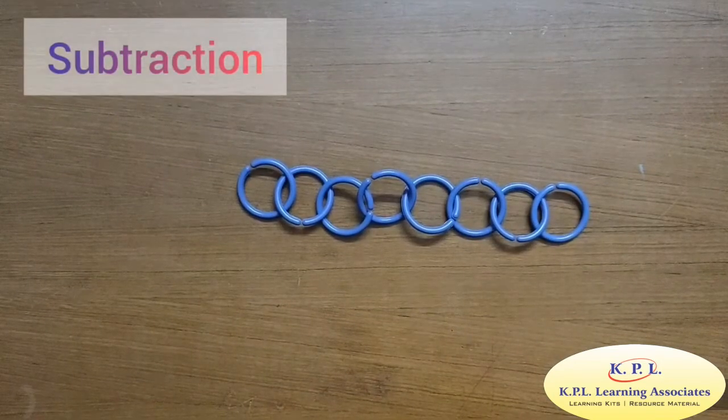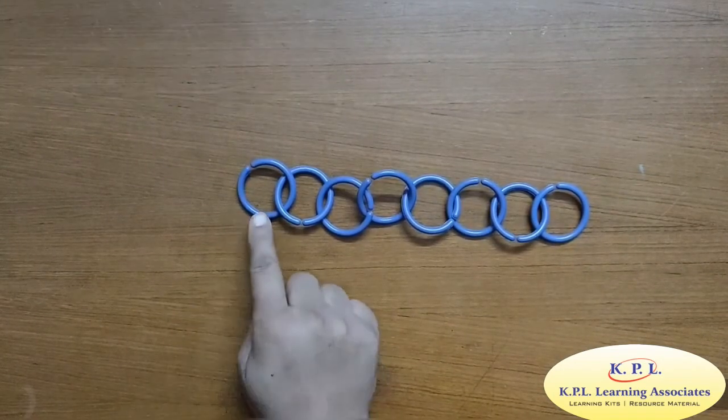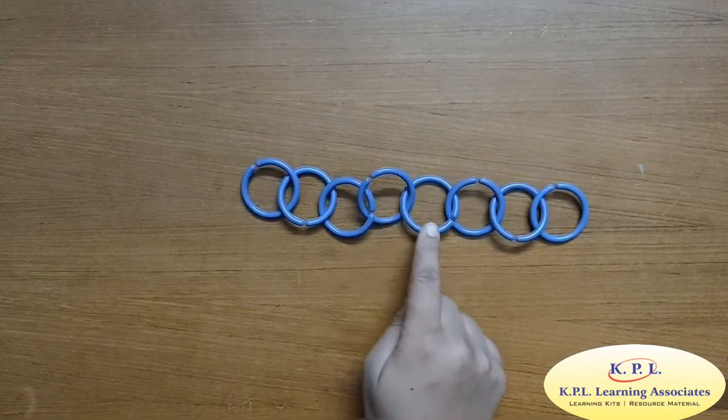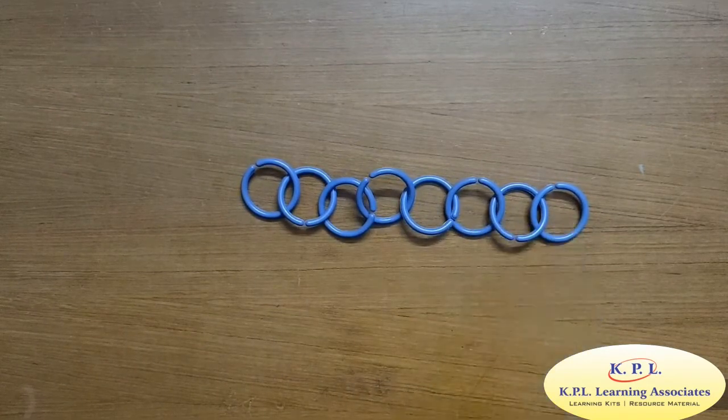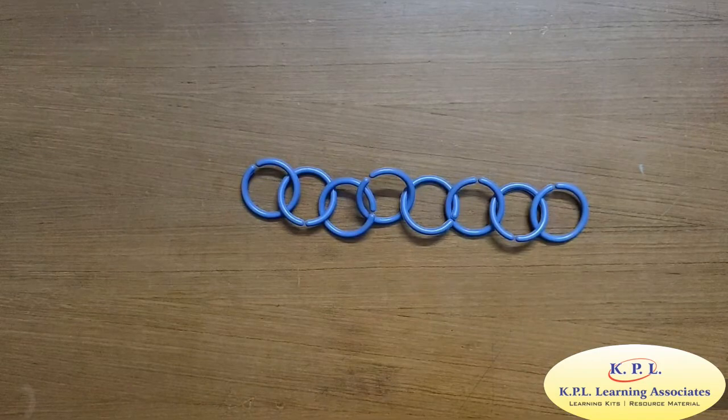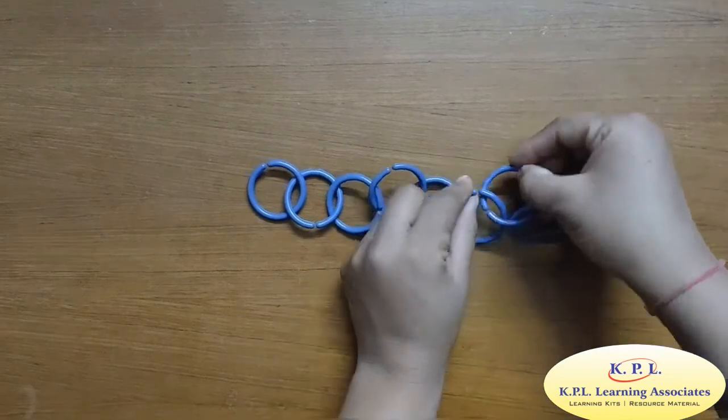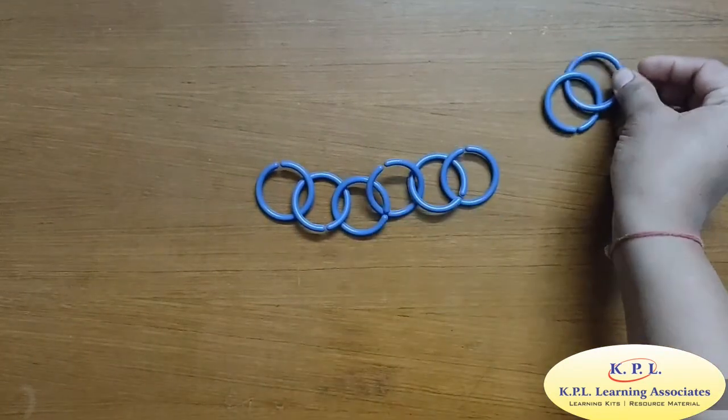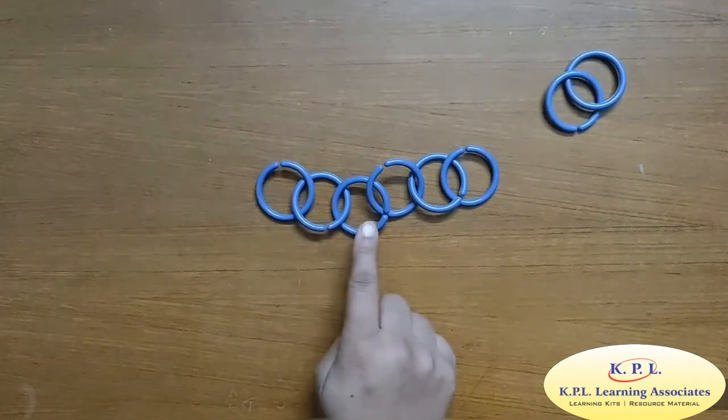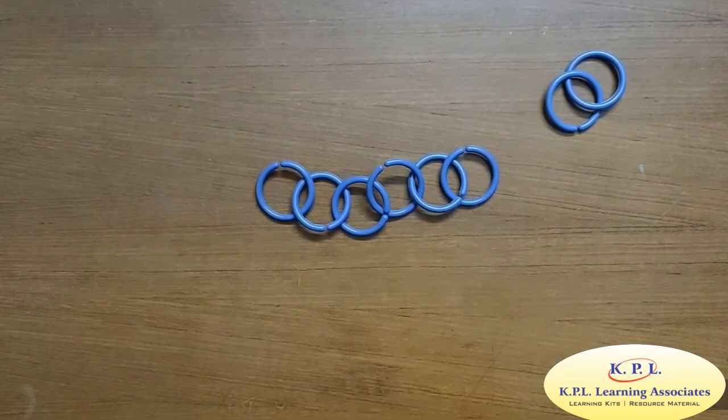Subtraction. Here I have a chain of 1, 2, 3, 4, 5, 6, 7, 8. 8 circles. What will I get if I take away 2? Remaining I have 1, 2, 3, 4, 5, 6. 6 circles.